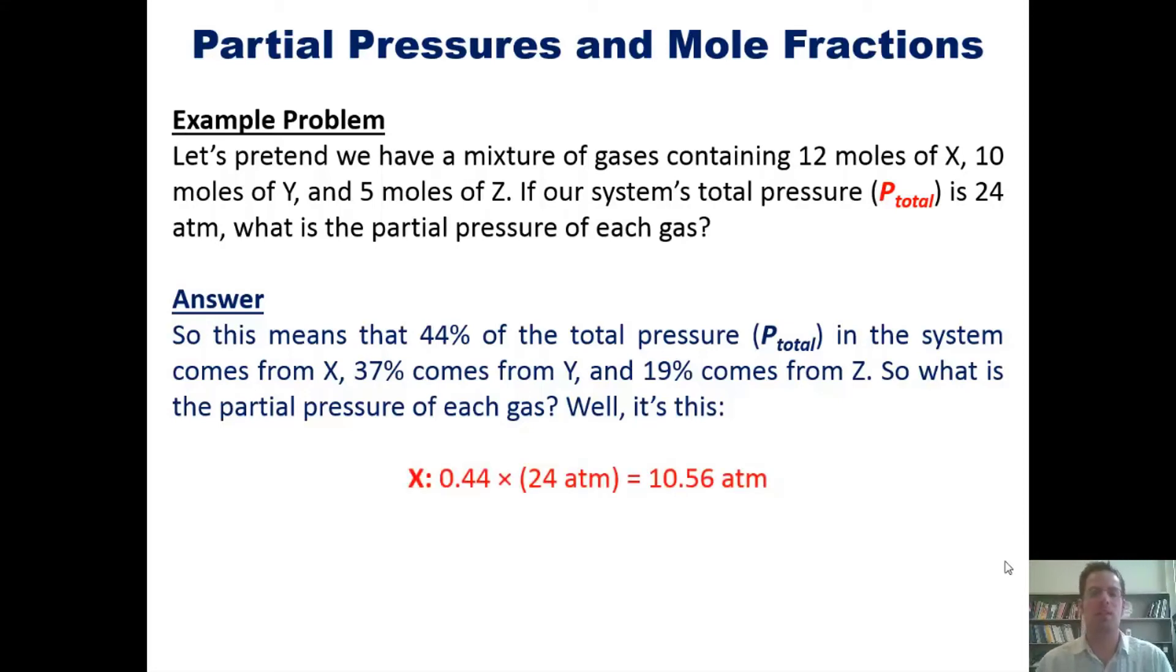0.44 multiplied by the total number of atmospheres in the system, 24, gives me 10.56 atmospheres of pressure for X. By analogy, I've got 8.88 atmospheres for Y and 4.56 atmospheres of Z. Got it? Good. Let's go to a problem.